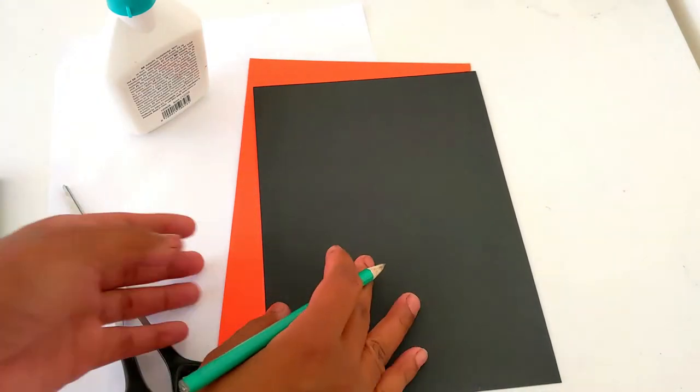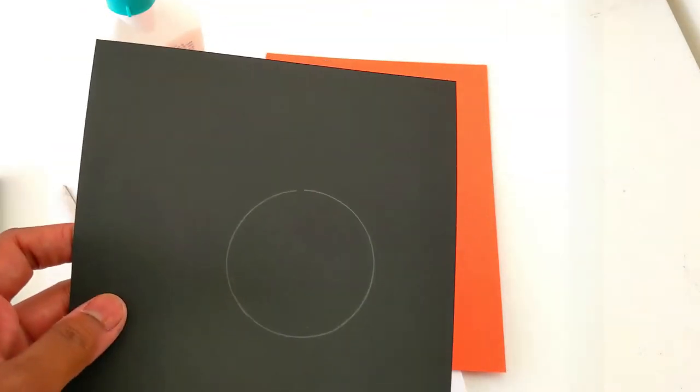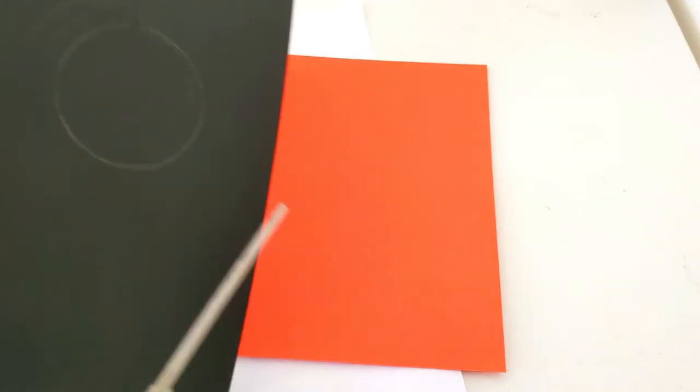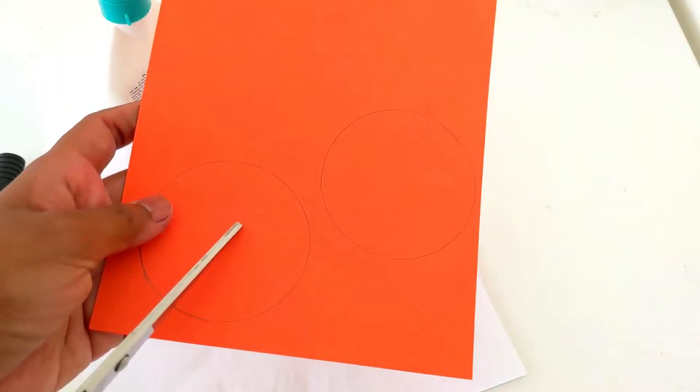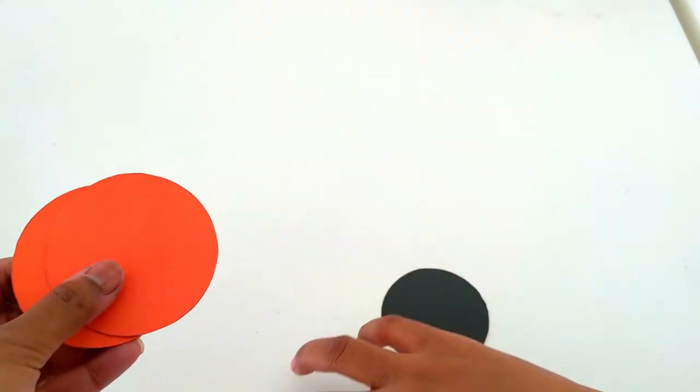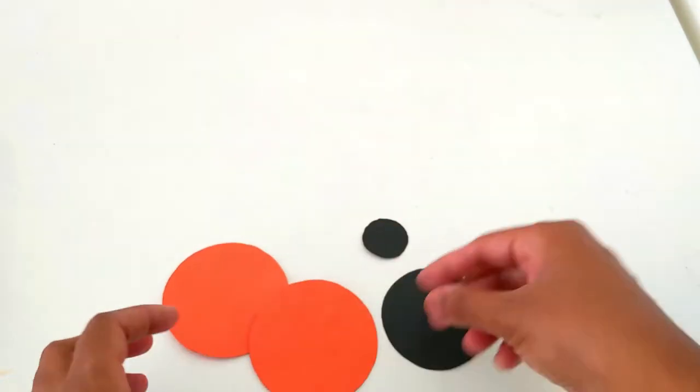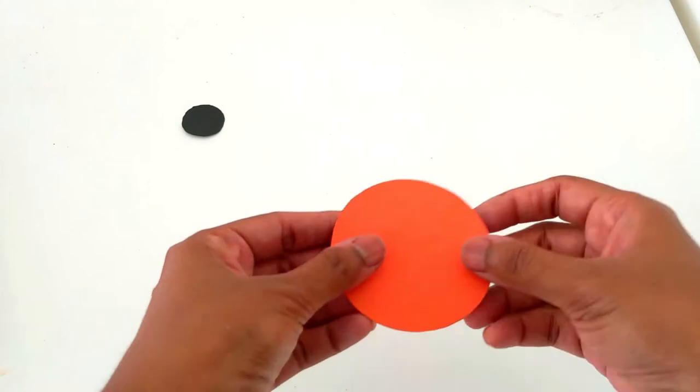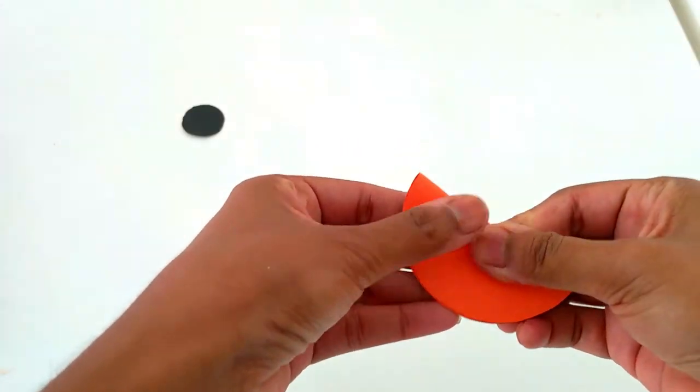Now I'm going to draw a circle and cut it. Two more circles. I'm cutting. See, four circles - two orange and two black. Remember that the orange circles should be a little bigger than the black ones.